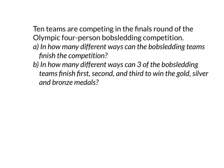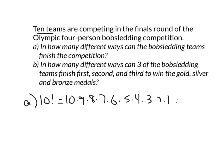Ten teams are competing in the opening finals round of the Olympic four-person bobsledding competition. Part A: in how many different ways can the bobsledding teams finish the competition? Since it's all 10 teams, we compute 10 factorial: 10 times 9 times 8 times 7 times 6 times 5 times 4 times 3 times 2 times 1. Punch that into the calculator and you get 3,628,800 - that's a lot of different orders those 10 teams could finish.